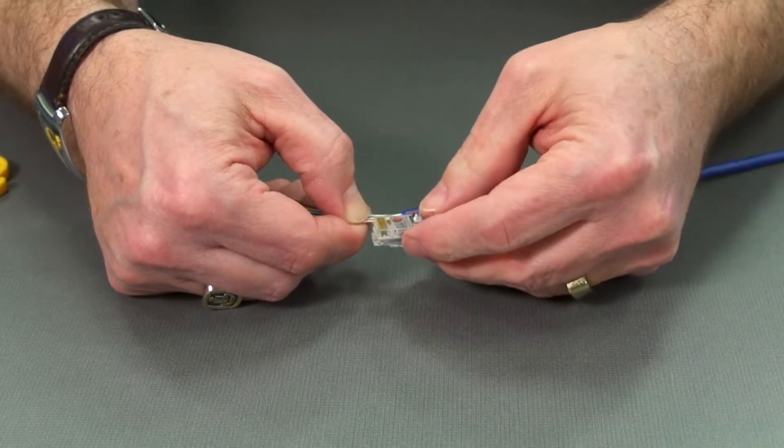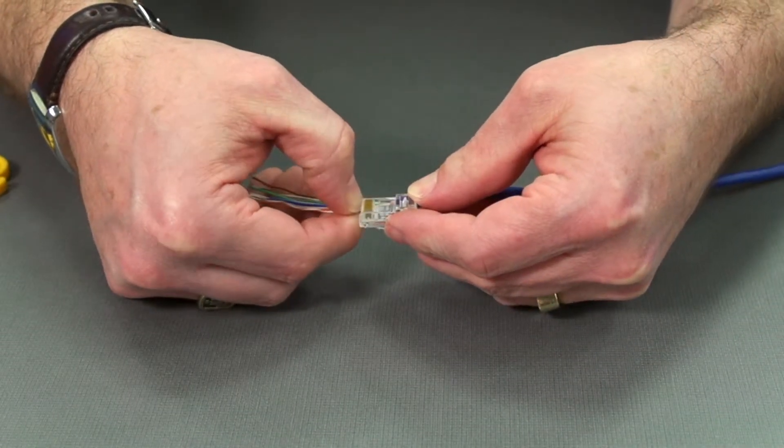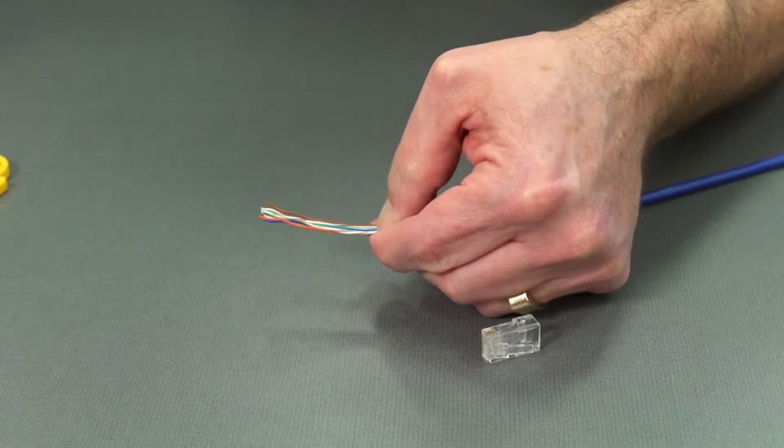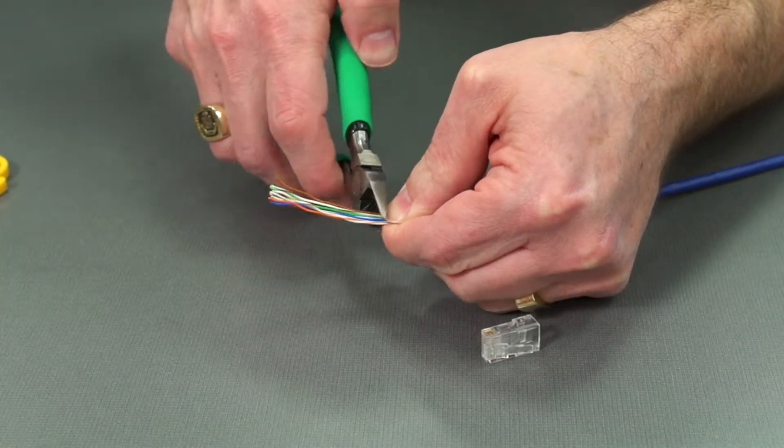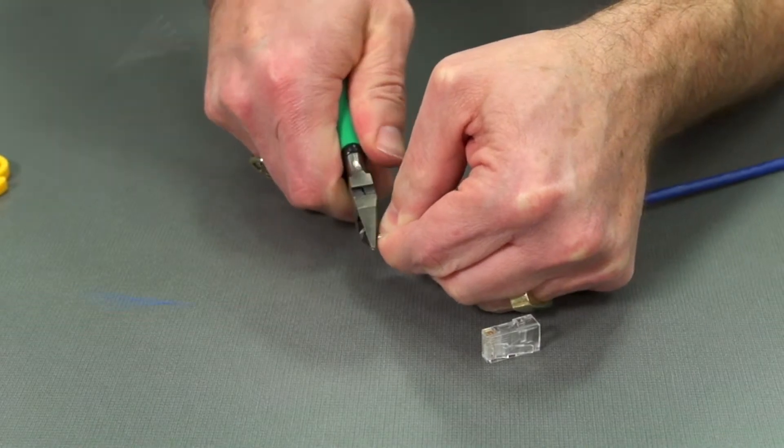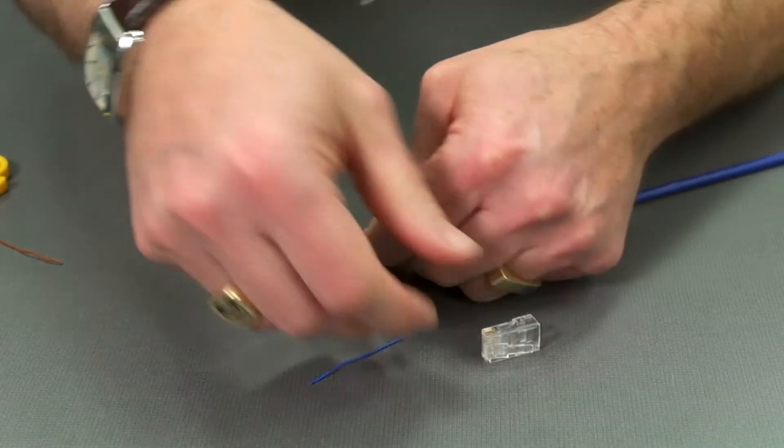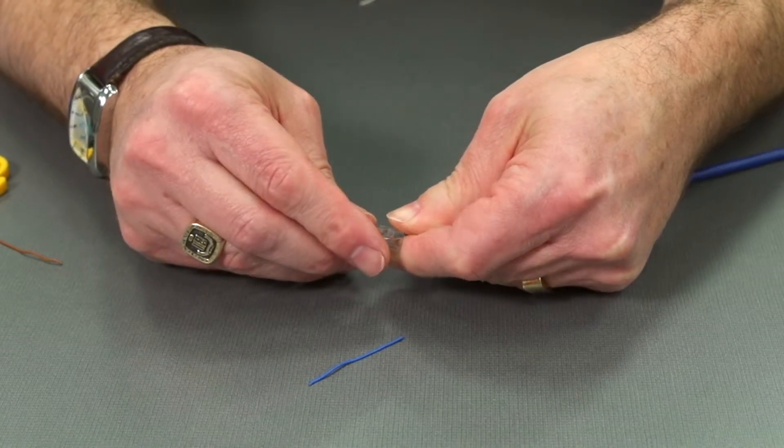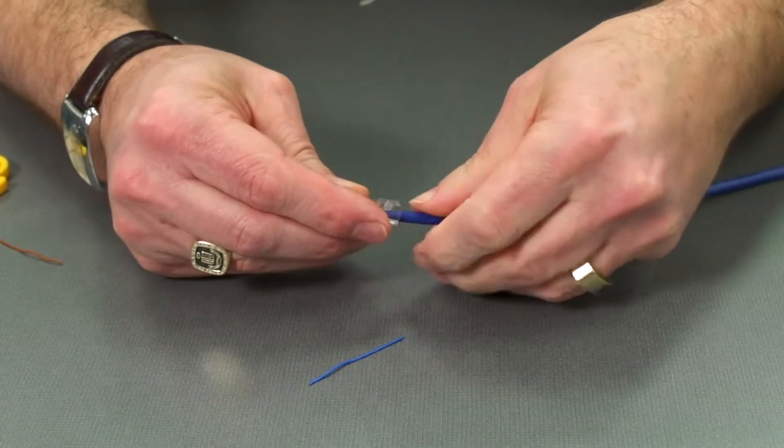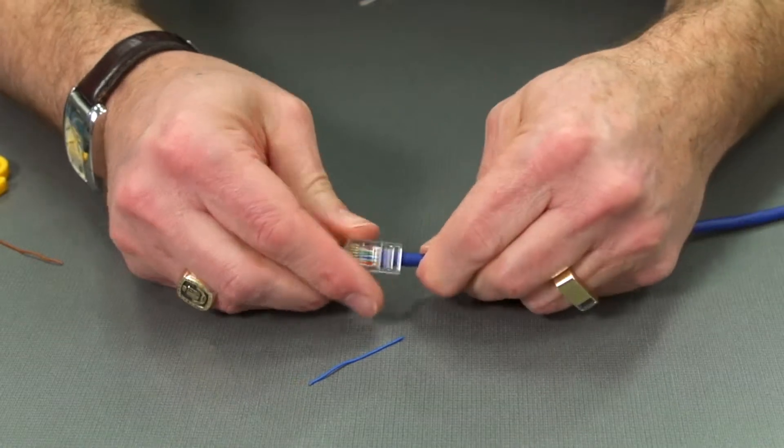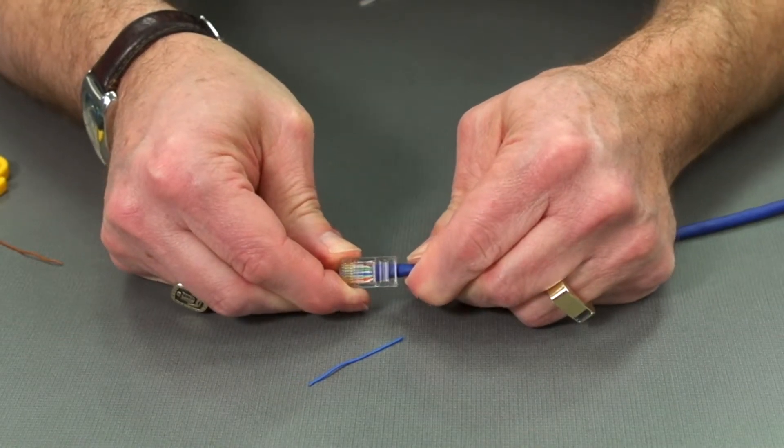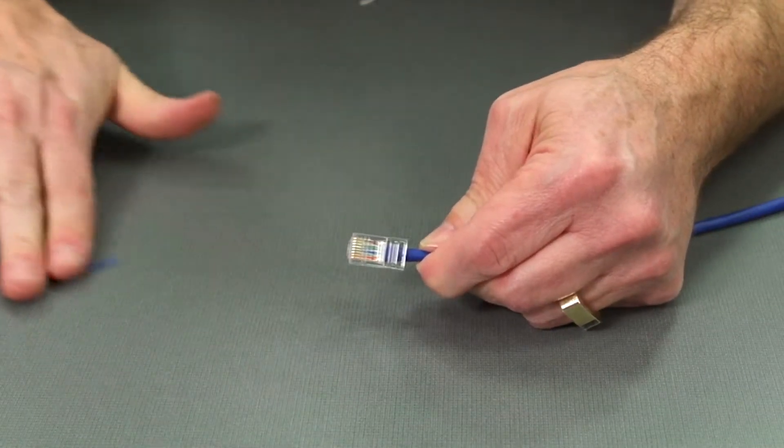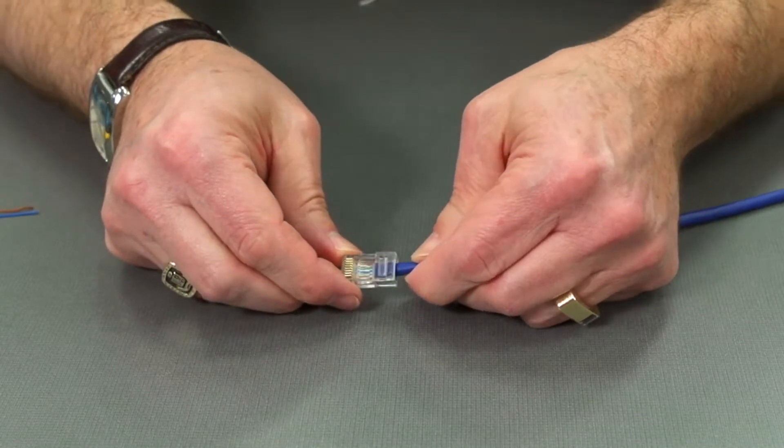We're going to hold this up, find where to cut, trim these, and now put on our connector, making sure we have everything lined up. Now I can look down inside this window and double check that I have all of the proper colors in order.